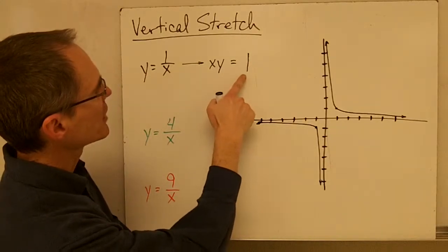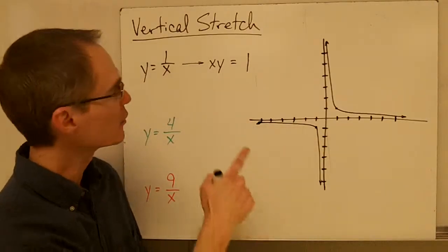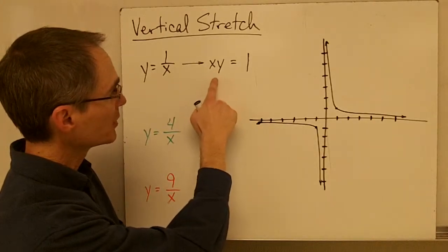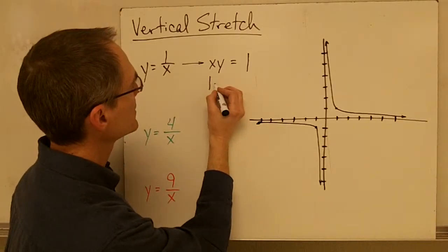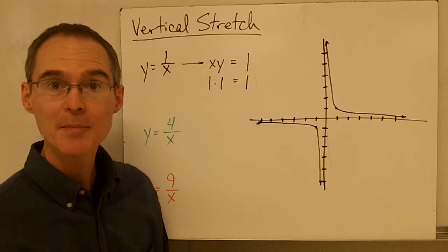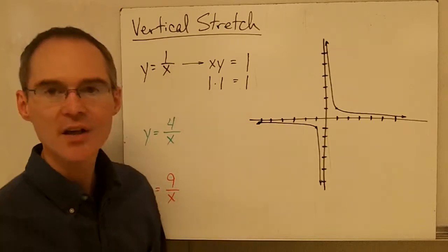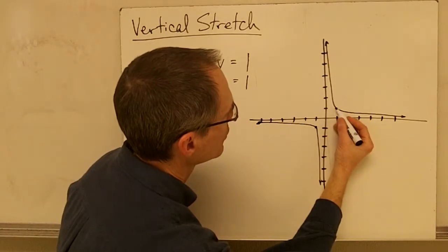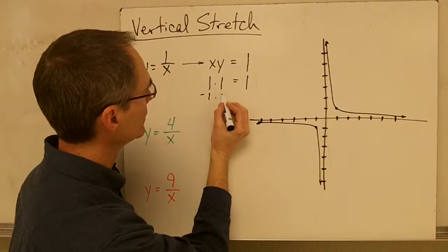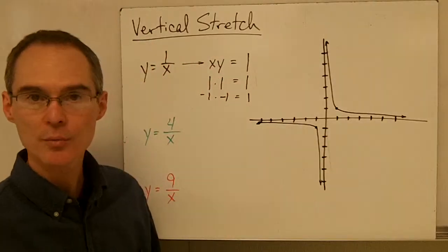If we ask ourselves what number we could multiply times itself to get 1 — in other words, is there a value where x and y are both equal to the same number so that when we multiply them together we get 1 — that number is just going to be 1, because 1 times 1 equals 1. So if x is equal to 1 and y is equal to 1, these numbers represent the corner points. When x is 1 and y is 1, that's that corner point right there. And if x is negative 1 and y is negative 1, that represents that corner point right there.